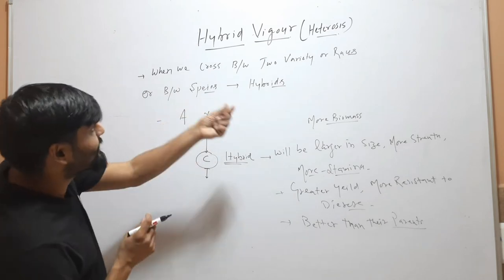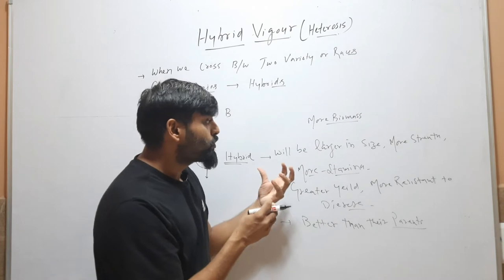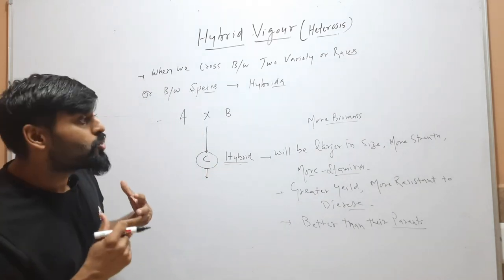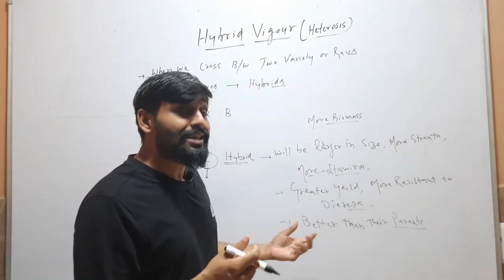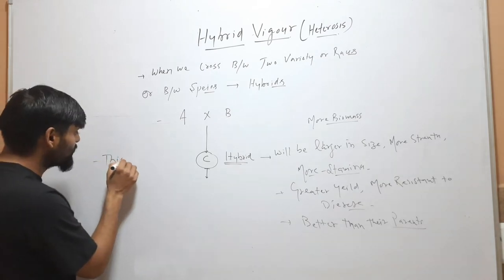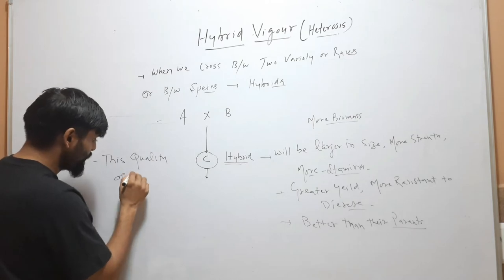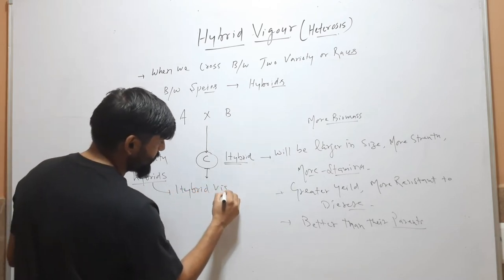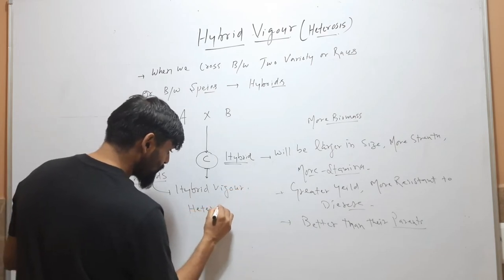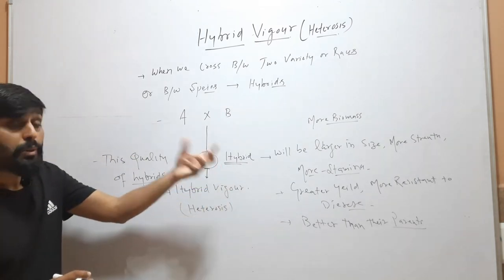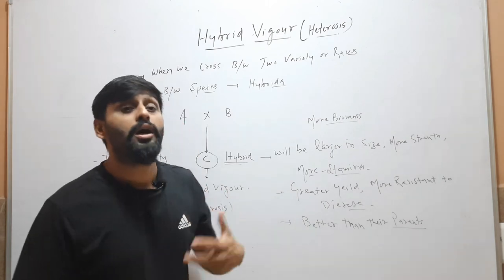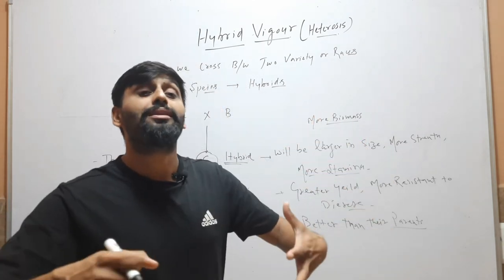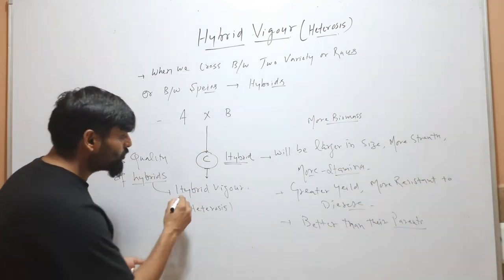When we cross between two varieties, races, or species, we get a hybrid. This hybrid will be larger in size than its parents, will have more strength and more stamina. In the case of plants, it will have greater yield and may accumulate more biomass. They are better than their parents. This quality of hybrids is called hybrid vigor or heterosis.